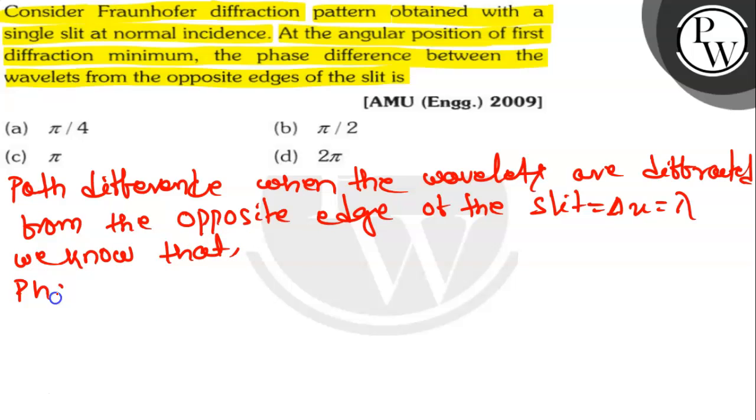phase difference φ is equals to 2π by λ into path difference del x. So here φ